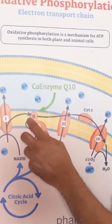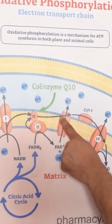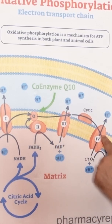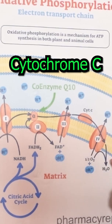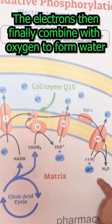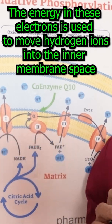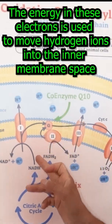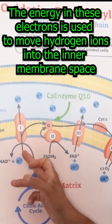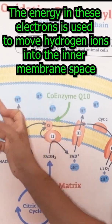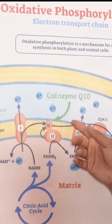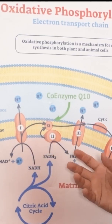Once the coenzyme Q10 has transported the electrons to protein complex three, they're then transported to protein complex four via cytochrome C, where at the right time and place they combine with oxygen to produce water. Because we're moving high energy electrons, we use that energy to push hydrogen ions from the inside of the mitochondria to the inner membrane space — the location where the electron transport chain shuttles electrons from complex to complex.